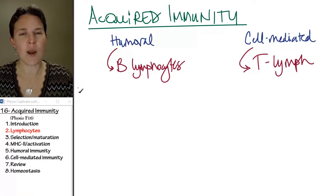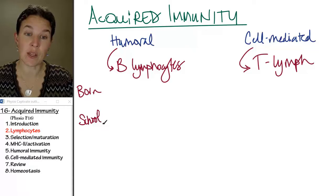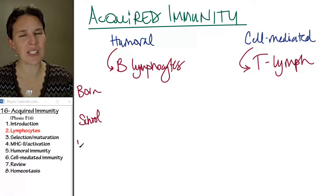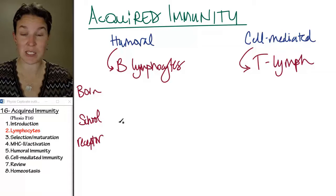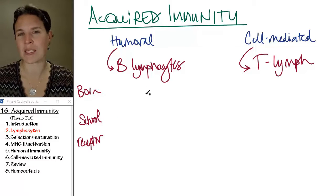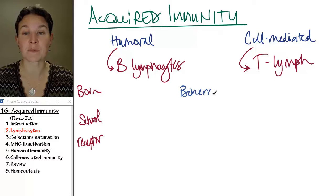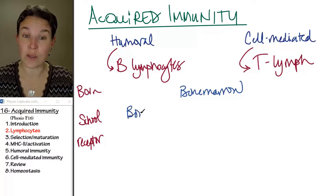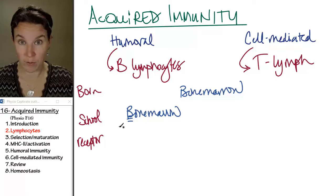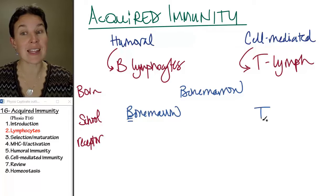We're going to look at where these cells are born, where they go to school, and what kind of receptors they have. Both B and T lymphocytes are born in the bone marrow. B lymphocytes also go to school in the bone marrow — B for bone marrow. T lymphocytes go to school in the thymus.